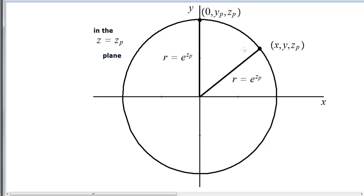Now, I am taking that circle in the z equals zp plane, and you can see throughout, on the circumference of this circle, z is staying as zp or z sub p. Radius is e to the power zp.